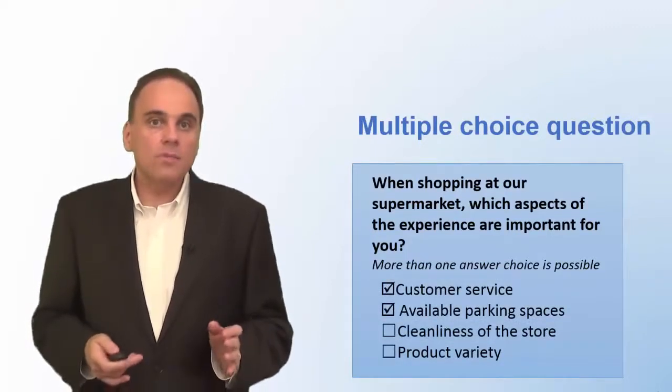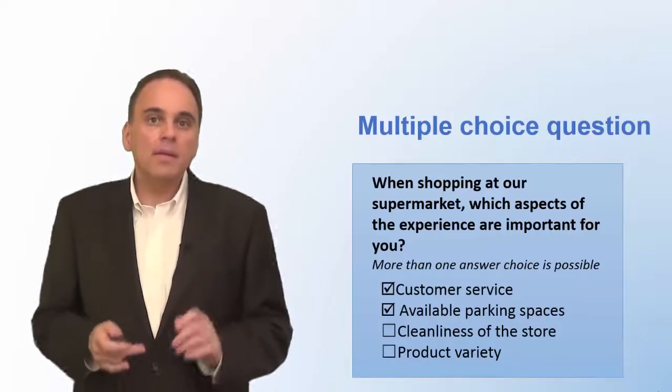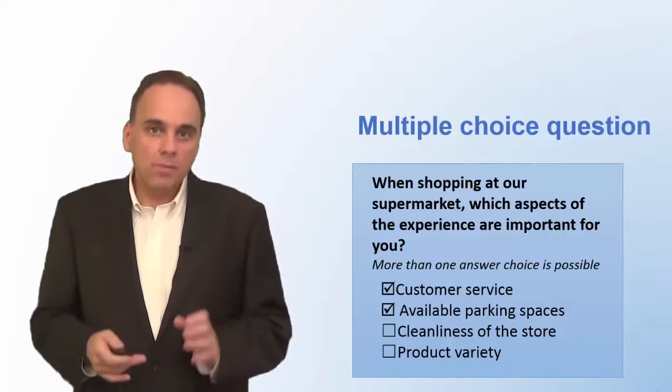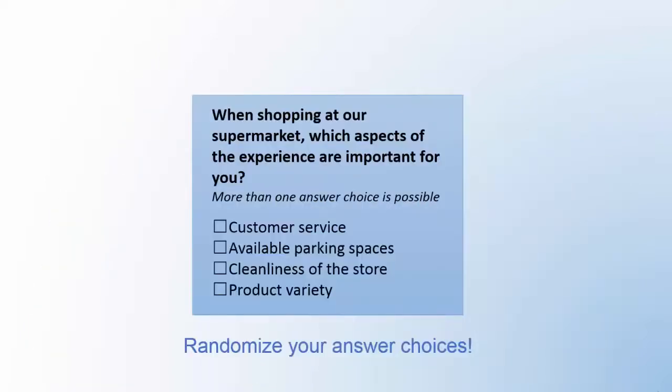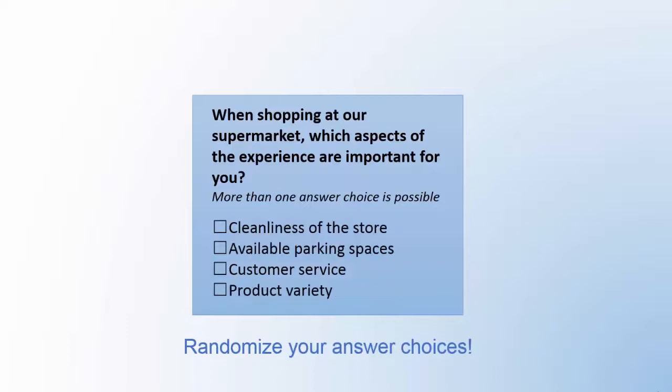If your online survey software allows you to do so, answers should not appear in the same order for all respondents. That's because respondents tend to choose answer choices that appear at the beginning or at the end of the list more often than other answer alternatives. To prevent this pattern, it makes good sense to vary the order of the answers for each respondent. Look for this option in your survey software.